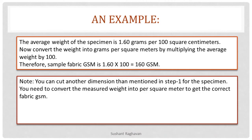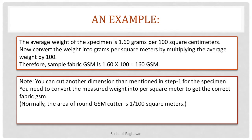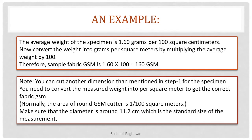Note: you can cut a dimension other than 10 cm × 10 cm for the specimen, but you will need to convert the measured weight into per square meter to get the correct fabric GSM. Normally, the area of a round GSM cutter is 1/100 square meter. Make sure that the diameter is around 11.2 cm, which is the standard size for measurement.